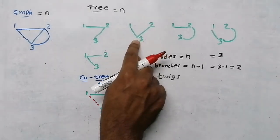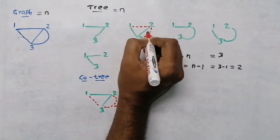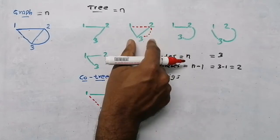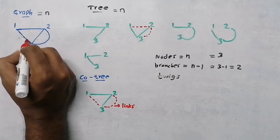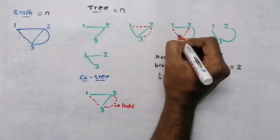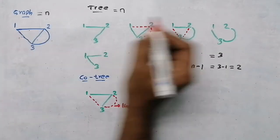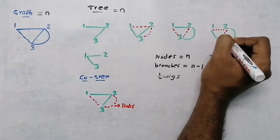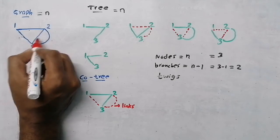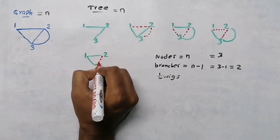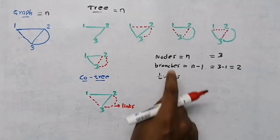Those dotted-line branches are called links, and a graph with links shown alongside the tree is called a cotree. For each tree we drew, the eliminated branches become the links of that cotree. For the first tree, we eliminated two specific branches — those are the links. For each subsequent tree, similarly, the eliminated branches form the links of that cotree.